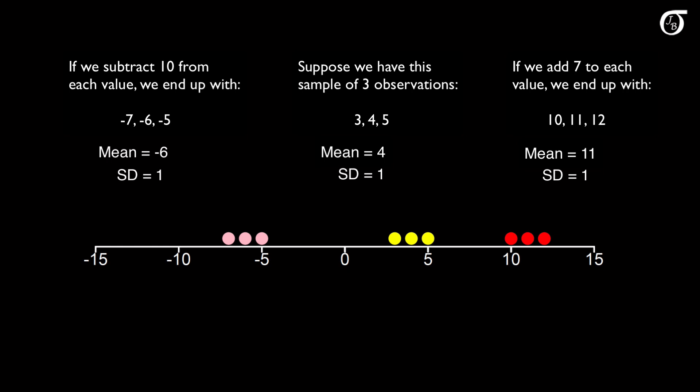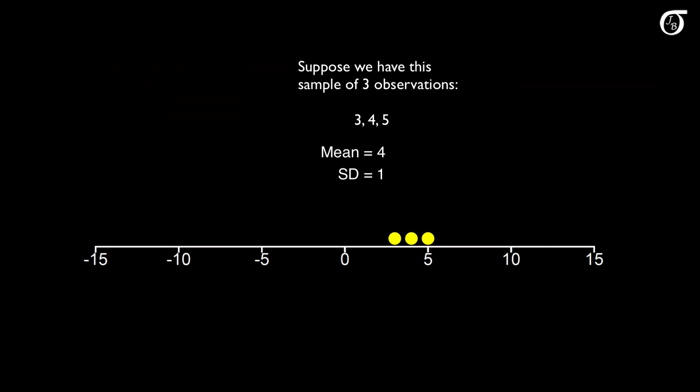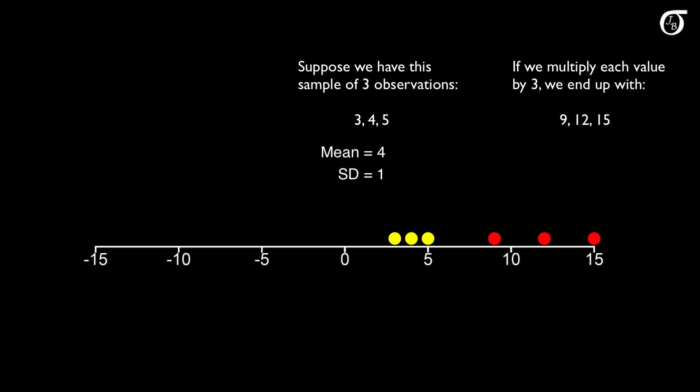What if we multiply by a constant? Starting again with our original values 3, 4, and 5 — mean of 4, standard deviation of 1 — suppose we multiply each value by 3. The new values are 9, 12, and 15. The mean of 9, 12, and 15 is 12, which is just 3 times the original mean. The variability is visually greater, and you can verify that the new standard deviation is 3, which is 3 times the old standard deviation. Multiplying each value by 3 multiplied the standard deviation by 3.